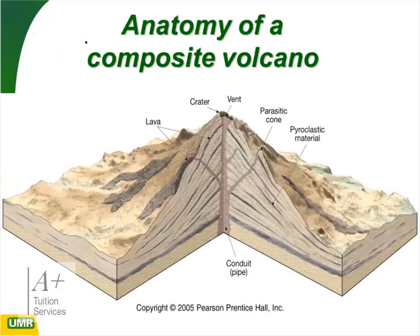The anatomy of a composite volcano includes the crater, vent, parasitic cone (a smaller cone that forms to the side), pyroclastic layers built up from previous eruptions, and other areas where lava can flow out through the parasitic cone. The conduit or pipe connects the magma chamber to the surface.